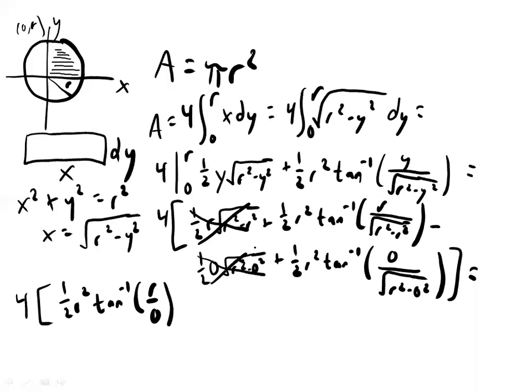1 half times 0. And this part has 1 half r squared. This is r squared minus 0 squared. Square root of that. That's just r. So it's tan inverse, but it's 0 over r. So that's tan inverse of basically 0.